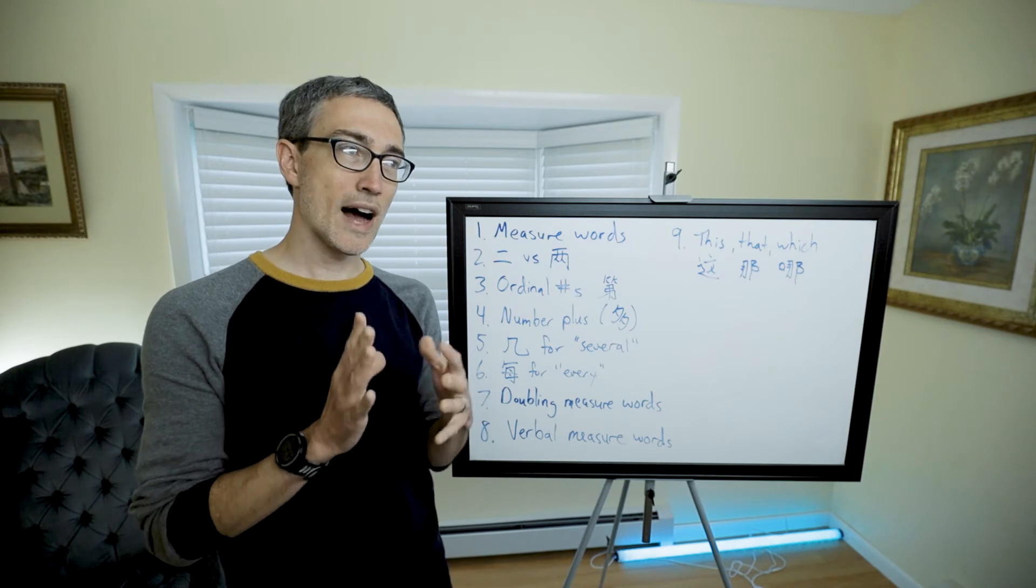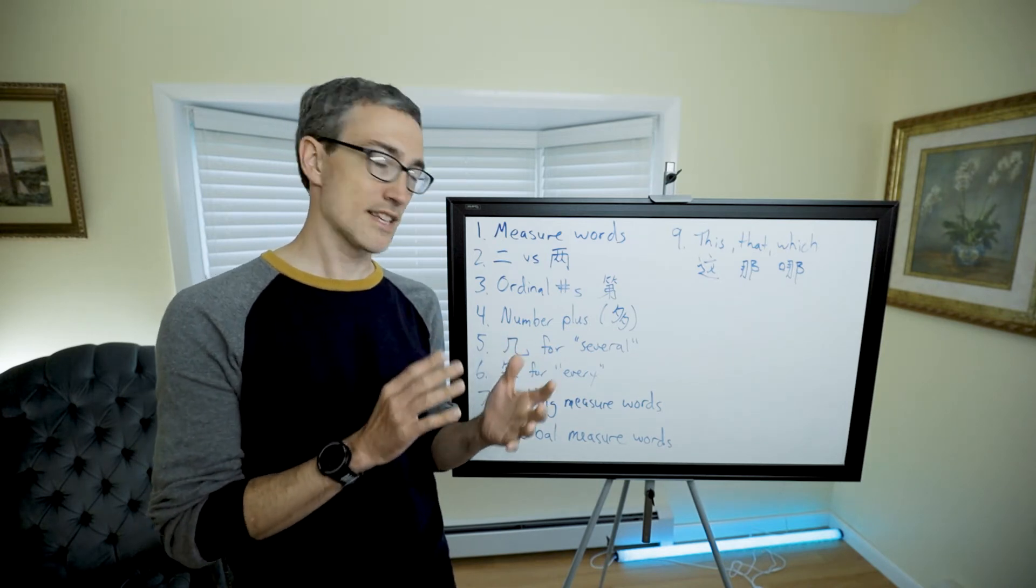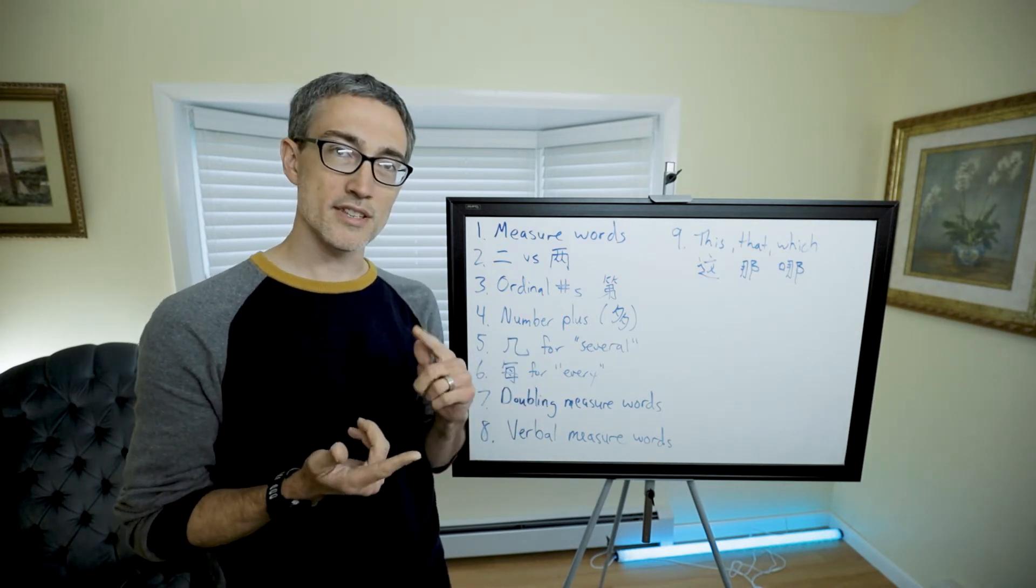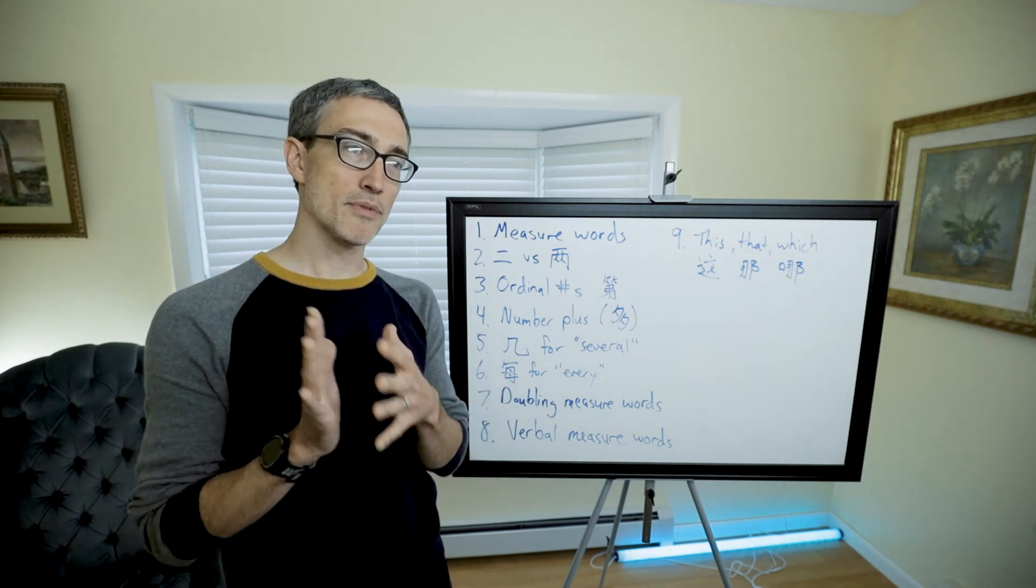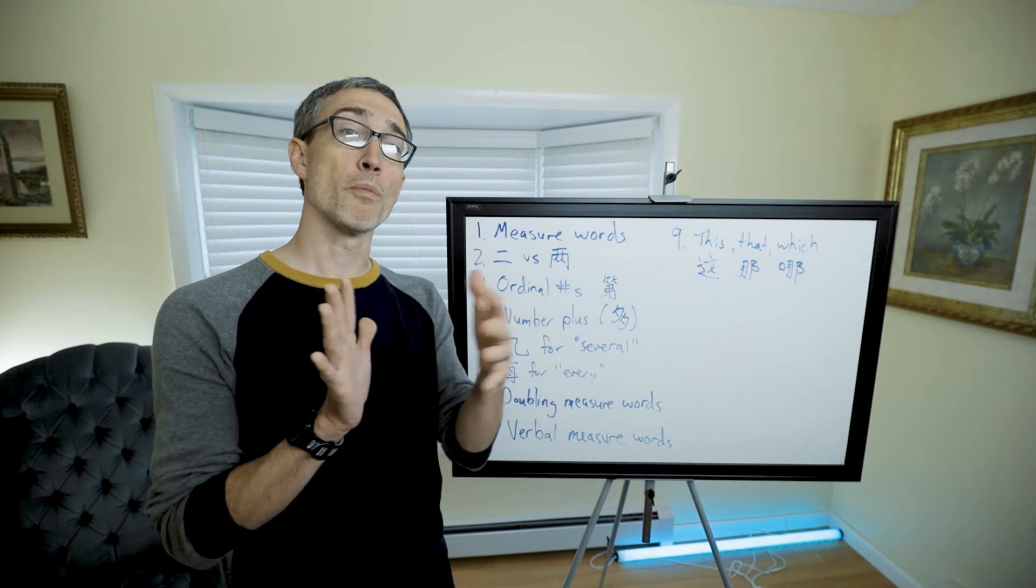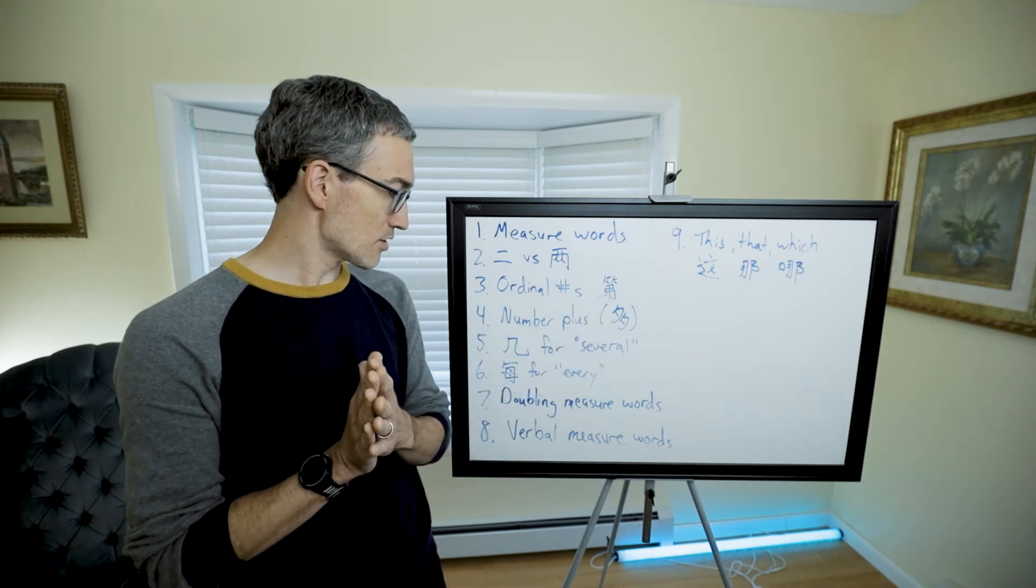Then we talked about verbal measure words. Those are words that tell you how many times an action has happened. The most generic one is 次 (cì). Then we had 遍 (biàn) to talk about something that happens, like referring to the whole process of it.